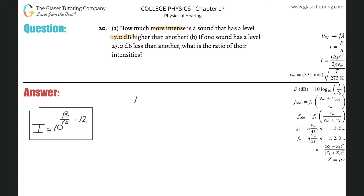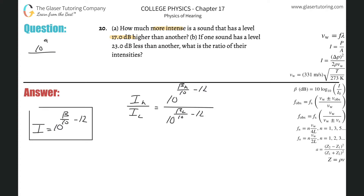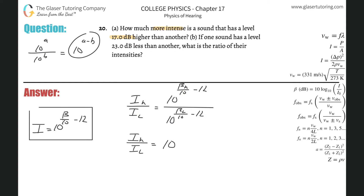It says how much more intense is a sound, so I'm going to write the intensity of the higher sound divided by the intensity of the lower sound, which will be equal to 10 raised to the decibel value of the higher sound divided by 10 minus 12, all divided by 10 raised to the lower beta divided by 10 minus 12.